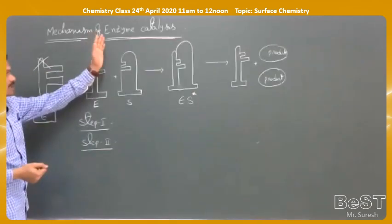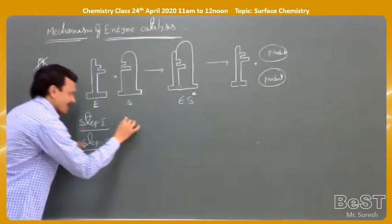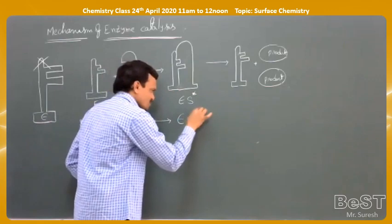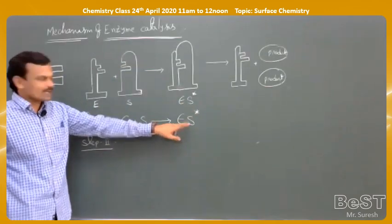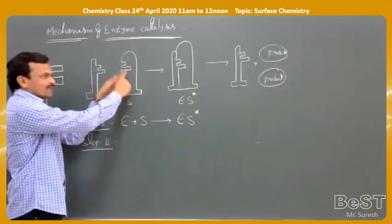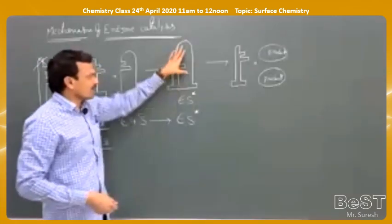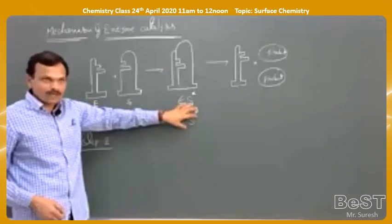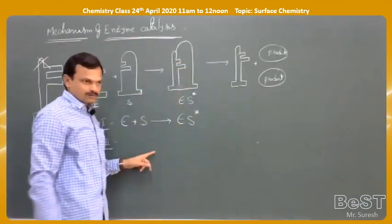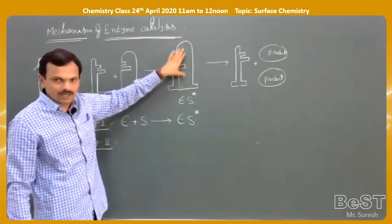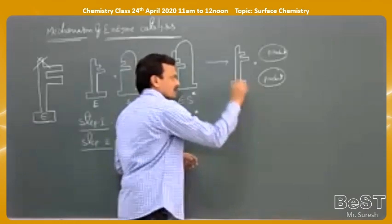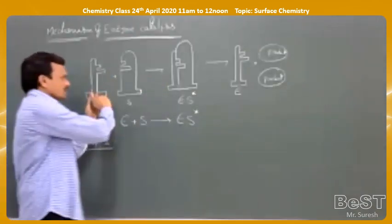That is why enzyme catalysis is specific. In the first step, the enzyme combines with the substrate to form what is called an enzyme-substrate complex (ES*). The enzyme binds to the substrate molecule where the active functional groups are present, forming an activated complex. The enzyme then causes chemical changes in the substrate molecule, converting the reactant to product. The enzyme is regenerated in its original state.